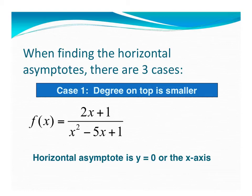In this case, the degree in the numerator is smaller than the degree in the denominator. Notice how I have a degree of 1 up here, x to the first, and here I have x squared. Since the degree in the numerator is smaller than the degree in the denominator, y equals 0 is my horizontal asymptote.